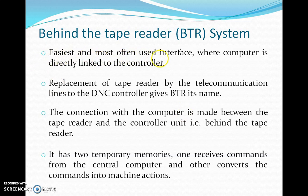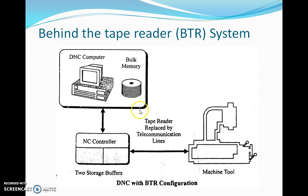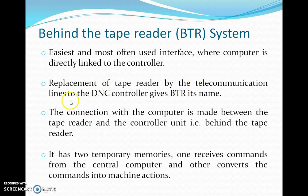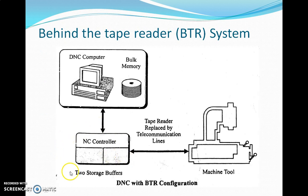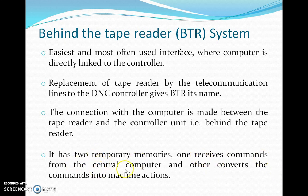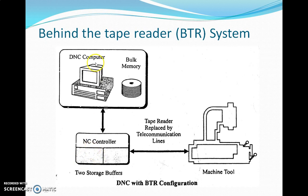BRT is the most common and easiest interface where the computer is directly connected to the controller. The tape reader is replaced by telecommunication lines linked to the DNC controller — that is why it is called the 'behind the tape reader' system. The connection with the computer is made between the tape reader and the controller unit. The controller has two temporary memories: one receives commands from the central computer, and the other converts those commands into machine actions.